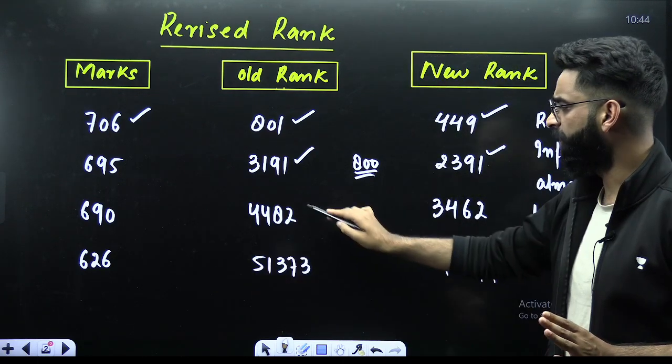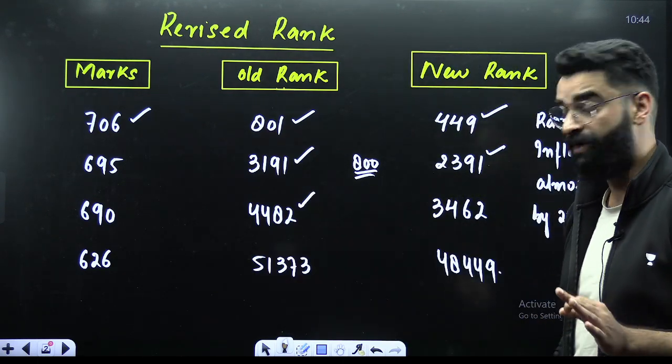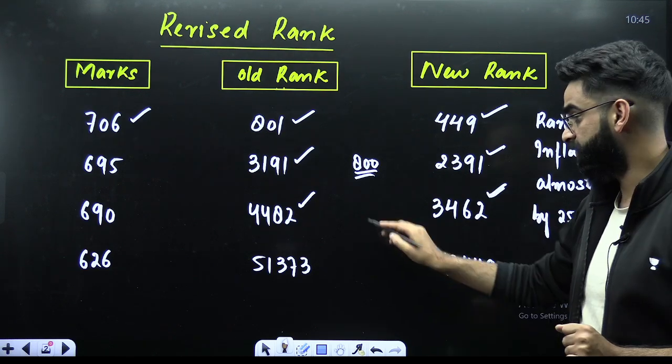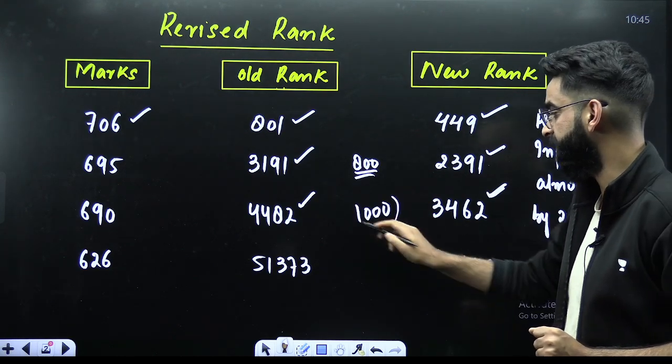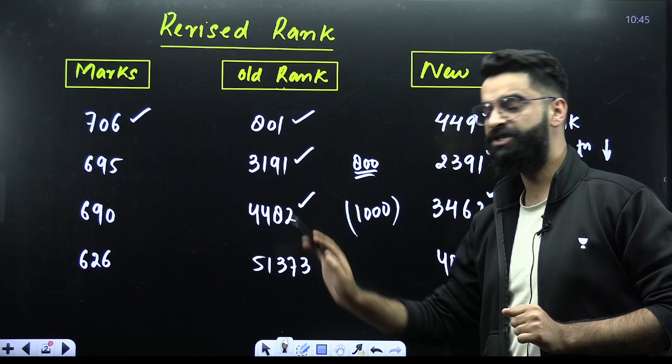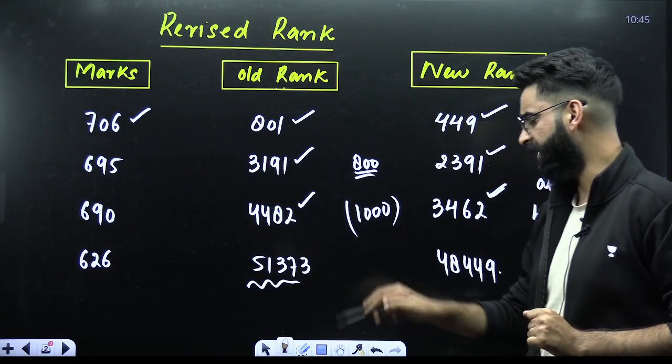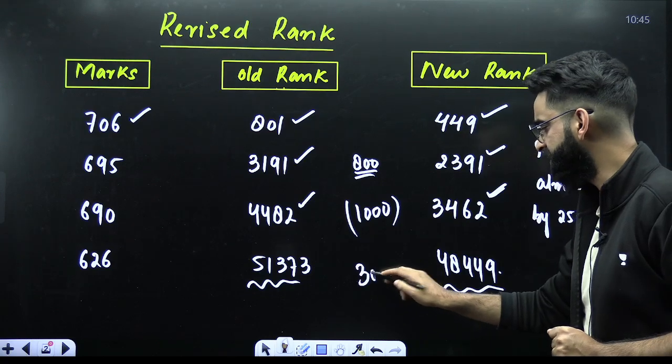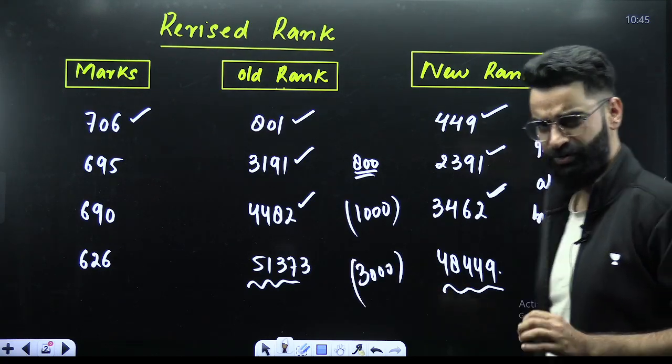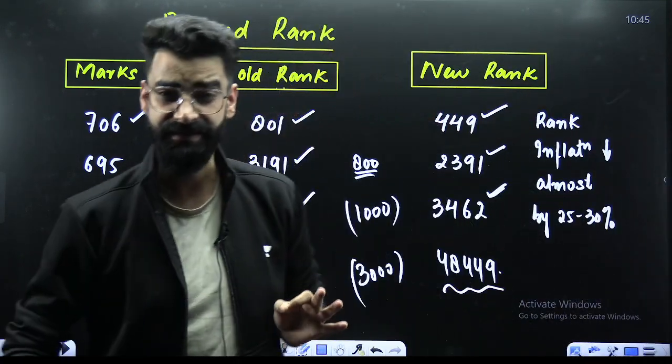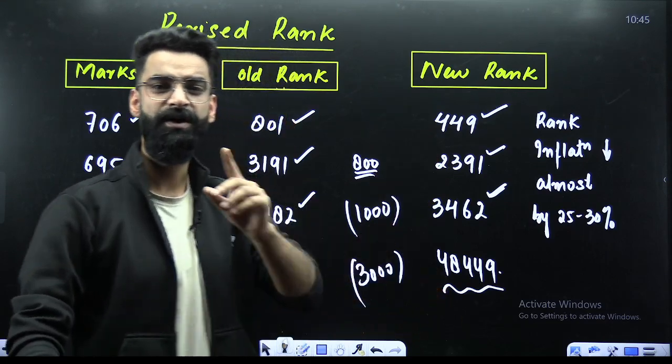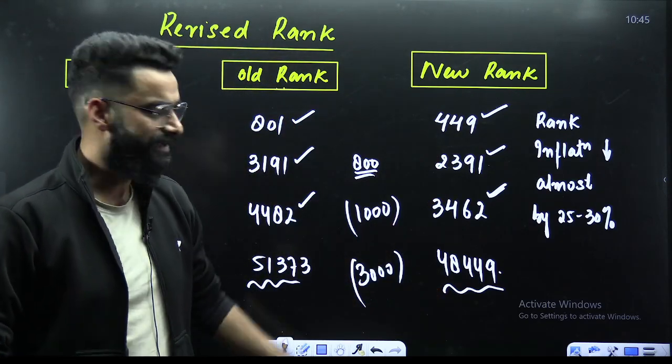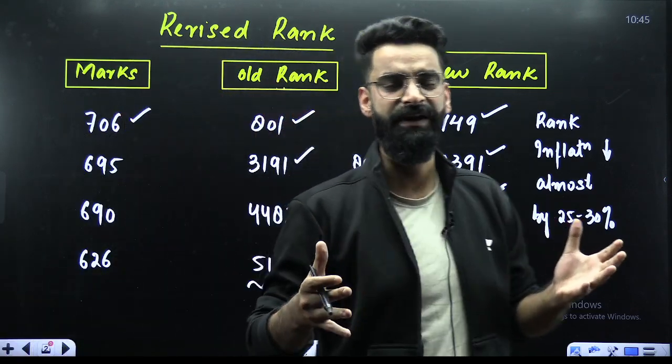At 690, a student was getting earlier 4442, now he is getting 3460. So the margin of 1000 here. Similarly at 626, the earlier rank was 51,373 and the new rank here is 48,000. So there is a margin of 3000. So yes, definitely there is a significant change in the ranks with that particular question which was there from the physics.